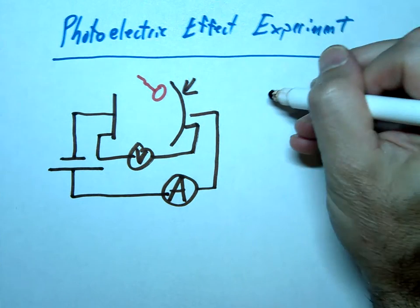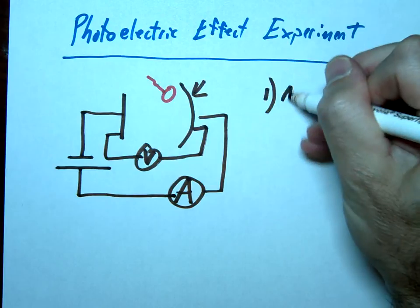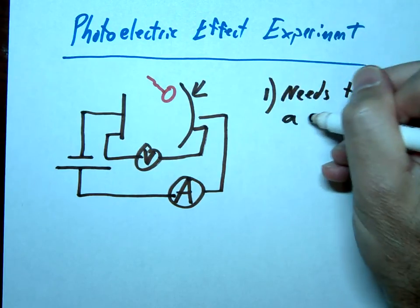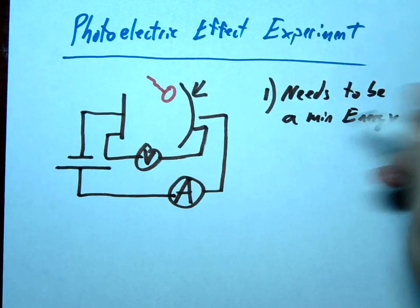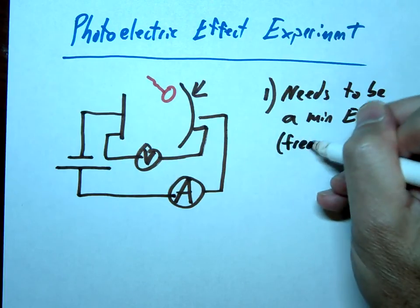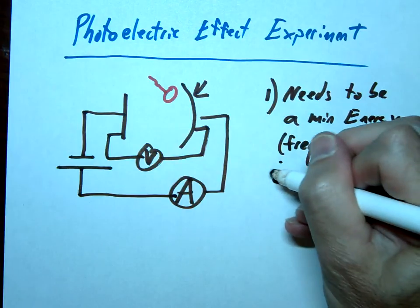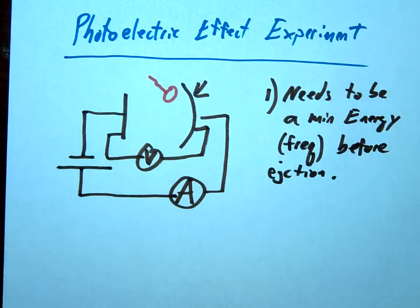So remember, one of the findings of the photoelectric effect is there needs to be a minimum energy before ejection occurs. And if we have minimum energy, we also would have a minimum frequency. We need to have some minimum energy before that ejection even occurs. Let's say with red light, nothing happens.